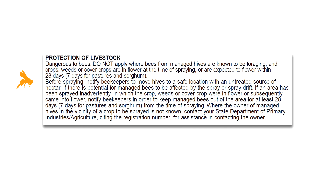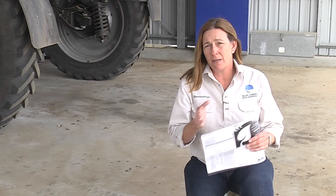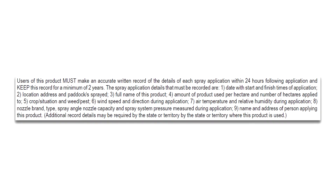Some labels will specify that you must identify if there are any beehives within a certain distance from where you're going to apply that product, and it's a requirement on that label to notify those beekeepers. The best way to do that is by using the Bee Connected app or the Bee Connected website. You may be keeping great records in compliance with your state-based requirements, but you must read the label and see if there are extra federal requirements — they are over and above your state-based requirements.